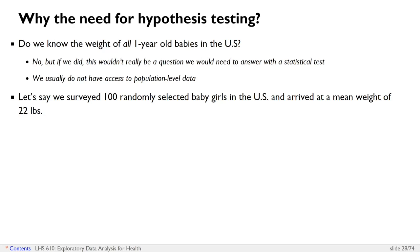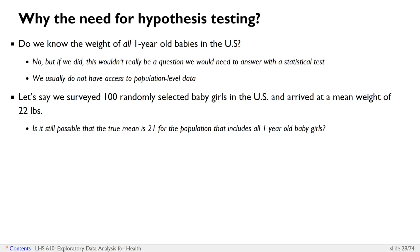Let's say we surveyed 100 randomly selected baby girls in the US and arrived at a mean weight of 22 pounds. Is it still possible that the true mean is 21 for the population that includes all one-year-old baby girls in the US?